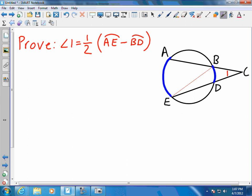the two arcs we need for this proof. So by the inscribed angle theorem, we can state that angle E is equal to one-half of arc BD, and that angle ABE is equal to one-half of arc AE.